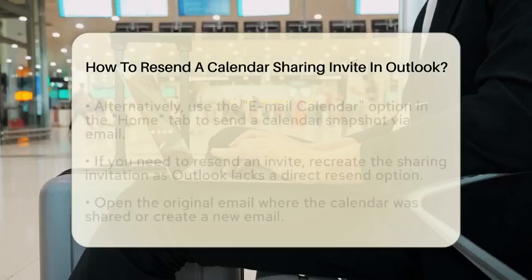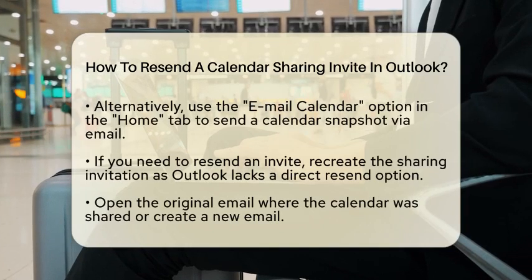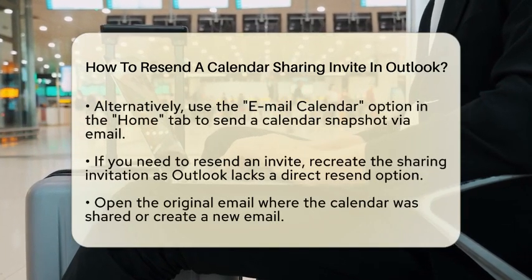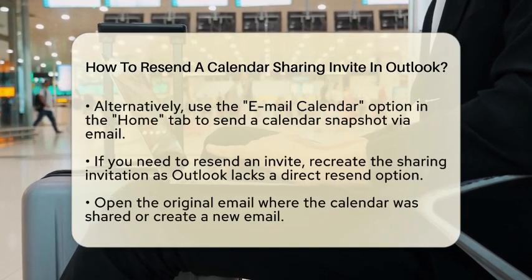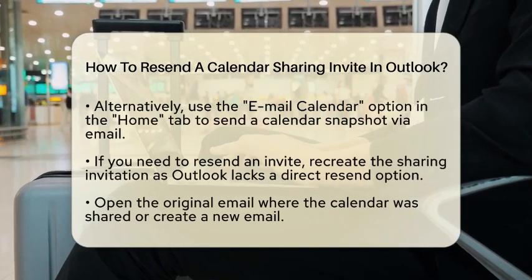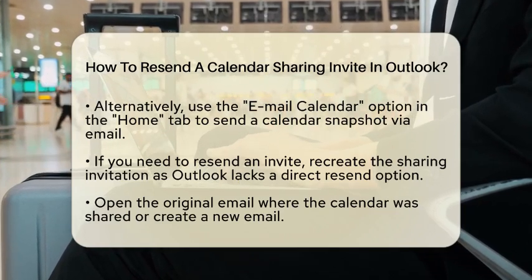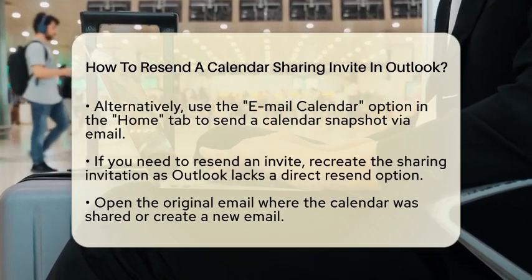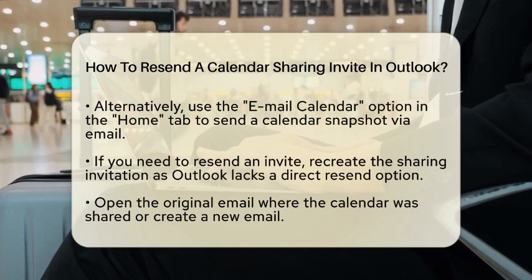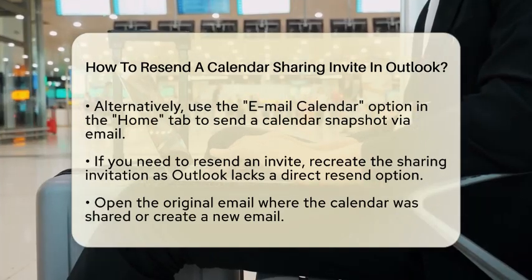Now that you are in the Calendar view, look for the Home tab again. Here, you will see an option that says Open Calendar. Click on that and then select From Address Book. This will allow you to view and manage any shared calendars you have access to.